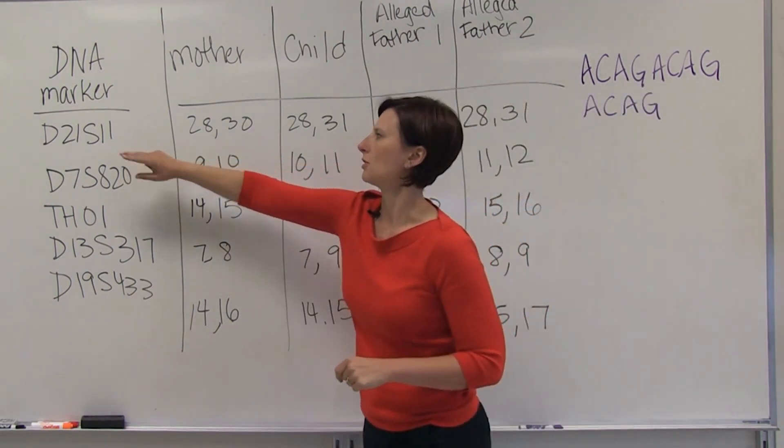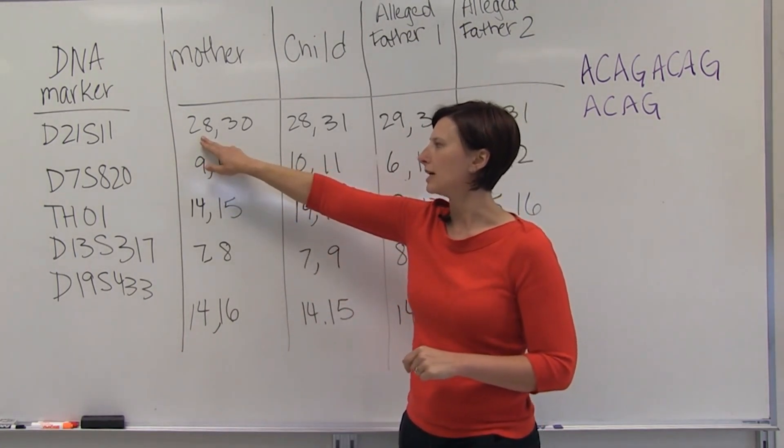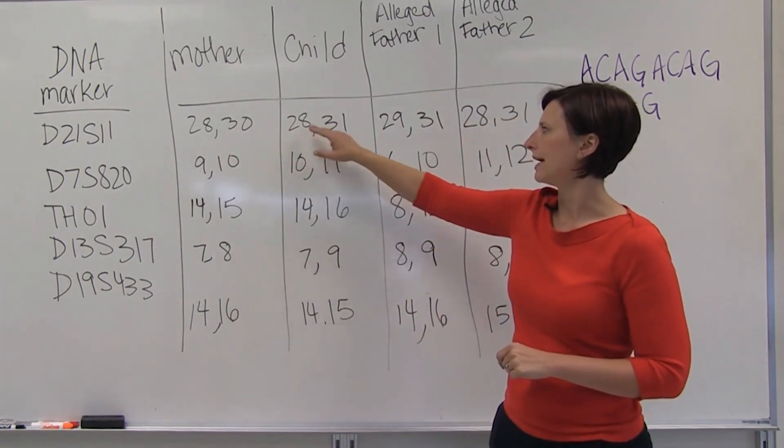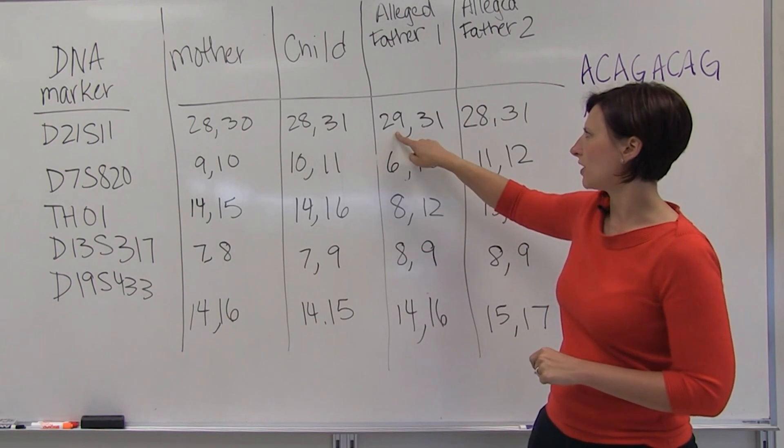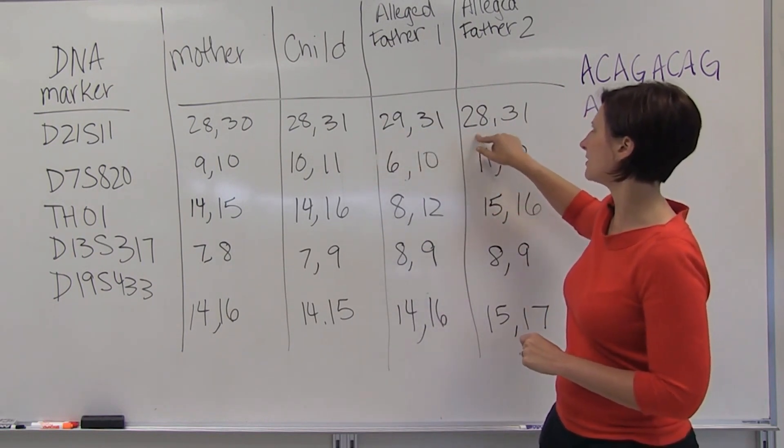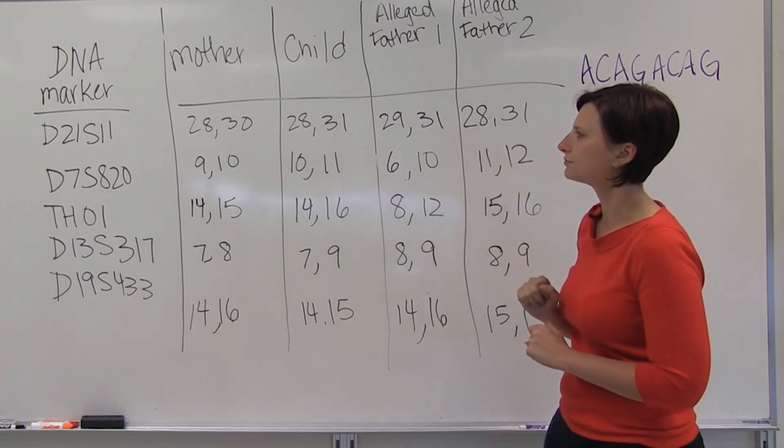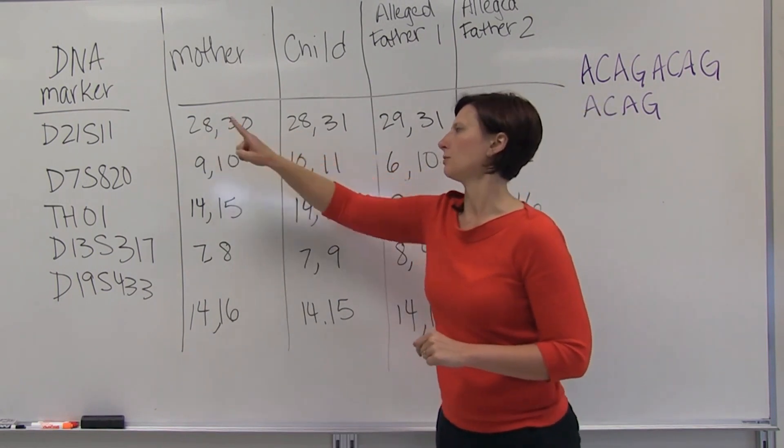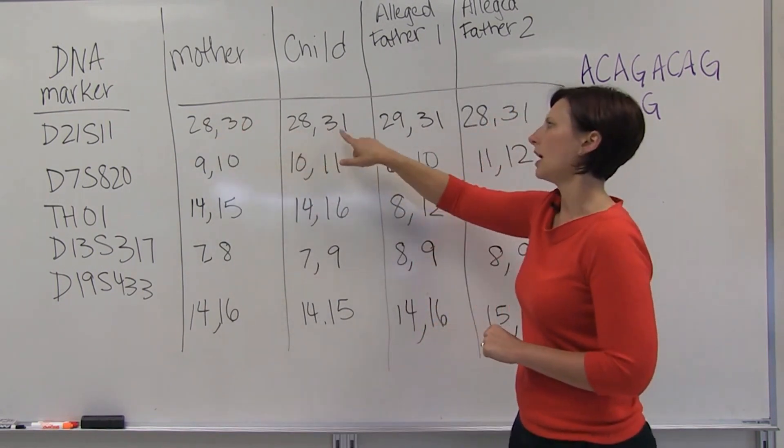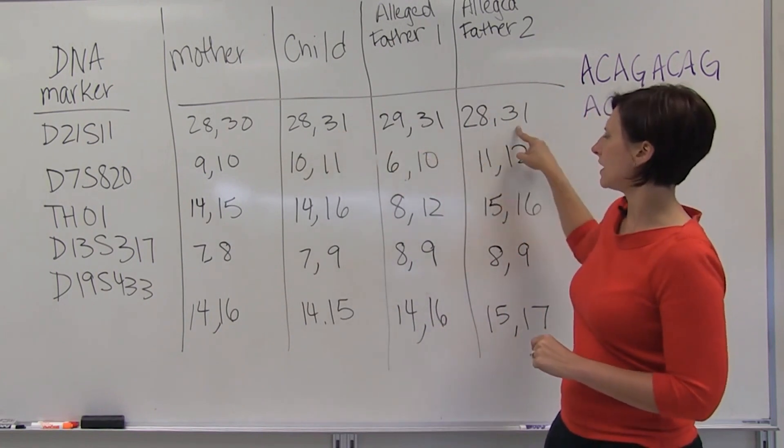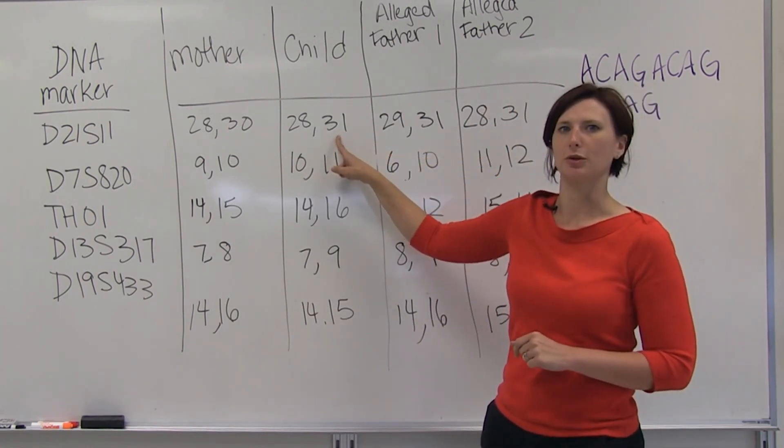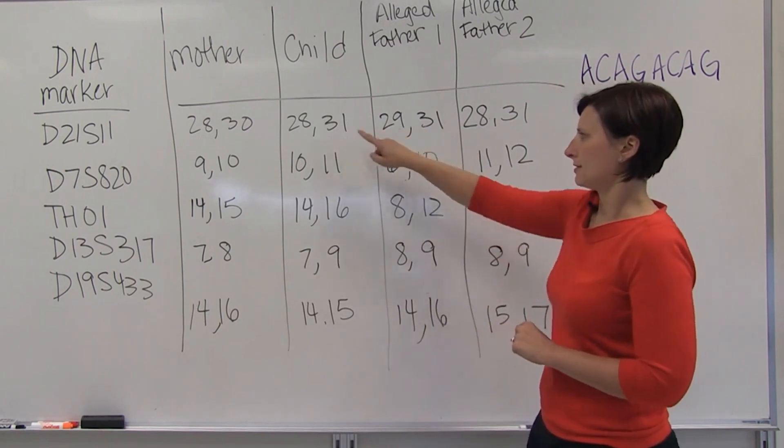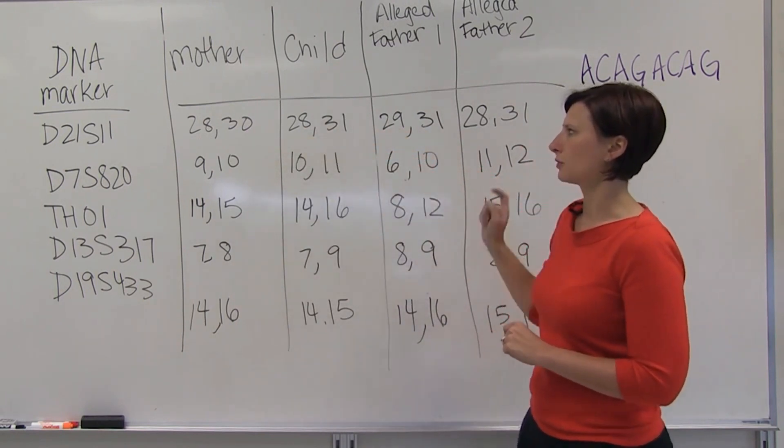The mother at one particular loci has one fragment of 28 repeats and one of 30. The child has 28 and 31. The first father has 29 and 31, and the second alleged father has 28 and 31. So the child could only have received the 28 from its mother because it doesn't have 30, and so either one of the alleged fathers could have contributed the child's 31 repeat gene. So this first locus doesn't rule out either of the alleged fathers.